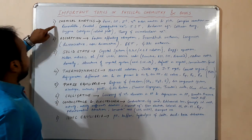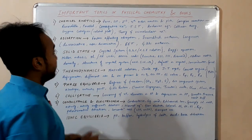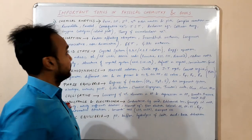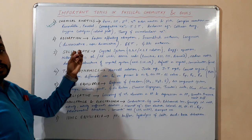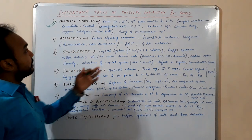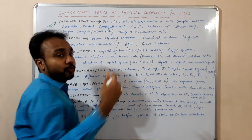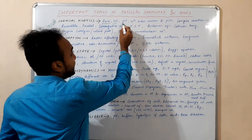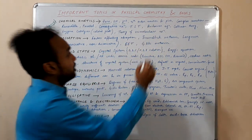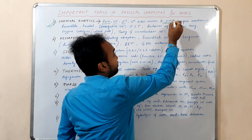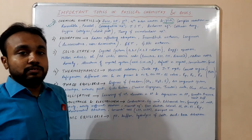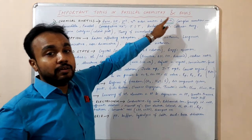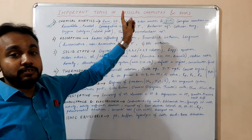The first topic is chemical kinetics. This is a very important chapter — it carries a lot of marks in the exam. The main things you have to focus on in kinetics are zero order reaction, first order, second order, and nth order reactions and the related plots. The related plots are very important. Make sure after reading all these things, practice the first order, second order, and zeroth order plots.